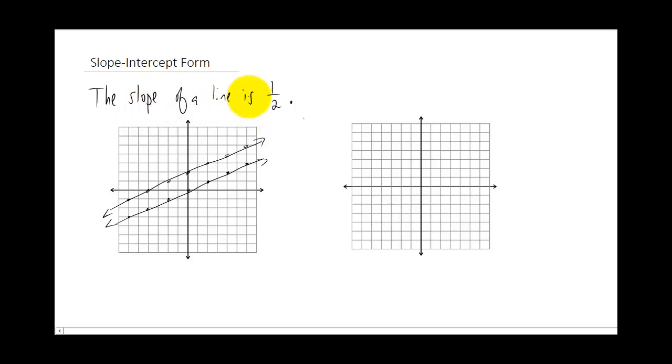So I guess my point is, you need two pieces of information to figure out the equation of a line. You need one, you need the slope, and two, you need a point on the line.